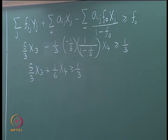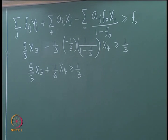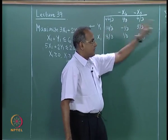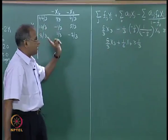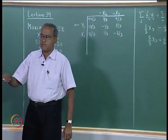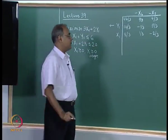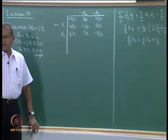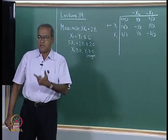On simplification, this gives us 5/3·X3 plus 1/6·X4 is greater than or equal to 1/3. This is the MILP cut. The presence of the negative coefficient has changed the 1/3 to 1/6 through the multiplication factor F0/(1-F0), which is 1/3 divided by 2/3. We include this into the LP optimum as a MILP cut.